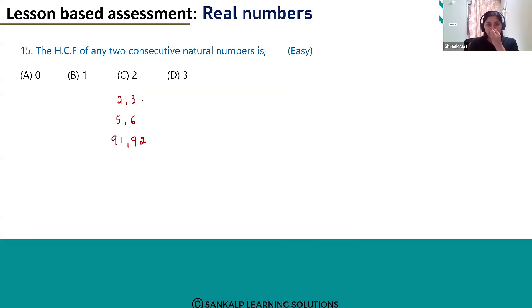So when we take the HCF of these two numbers, we can get 1 as the HCF. Only one is the HCF because we can't get any other factor as the common factor. So the HCF of two consecutive natural numbers will be 1 always.